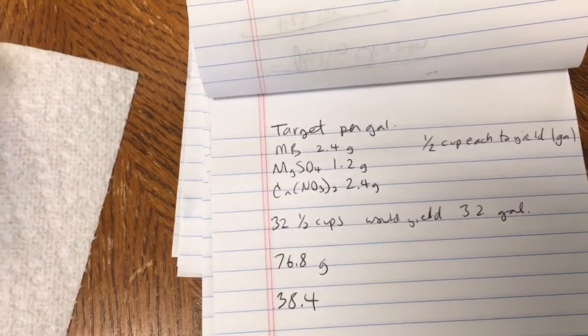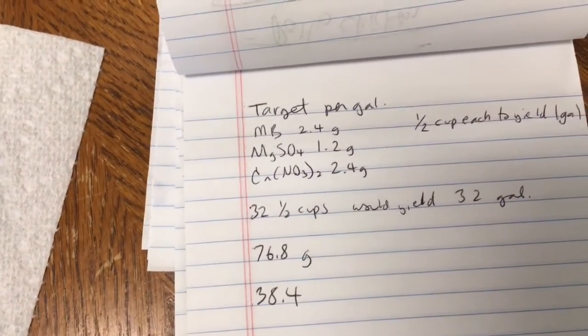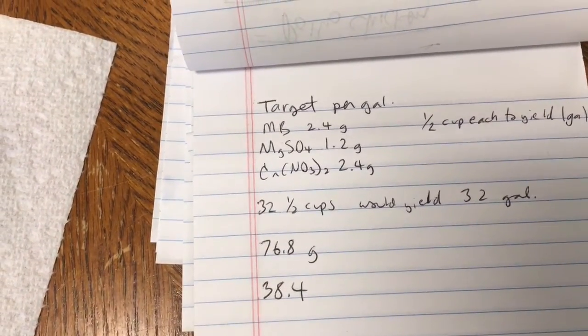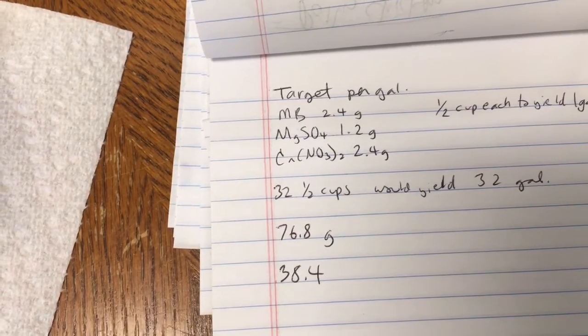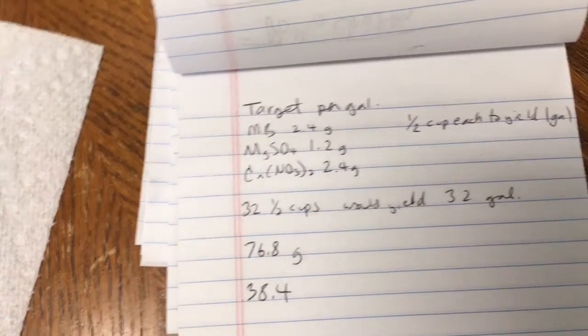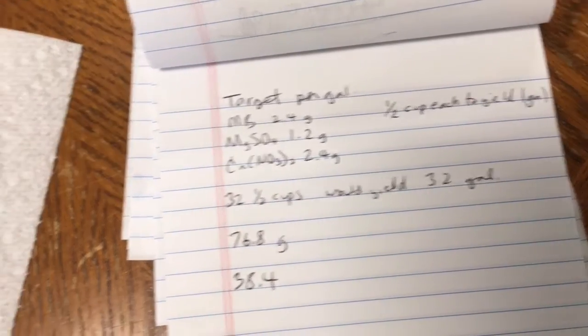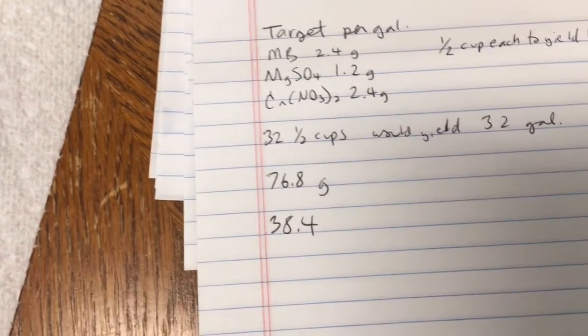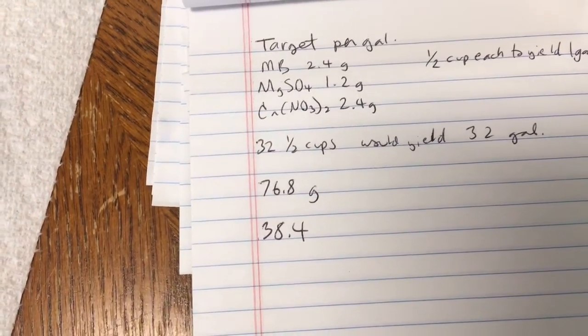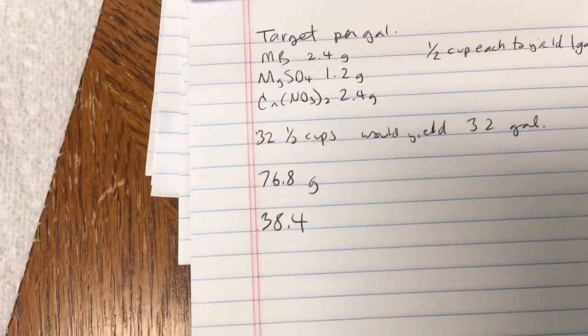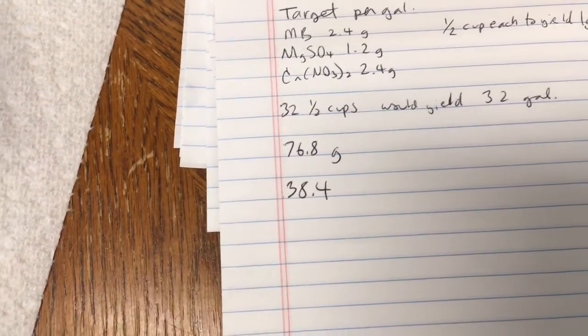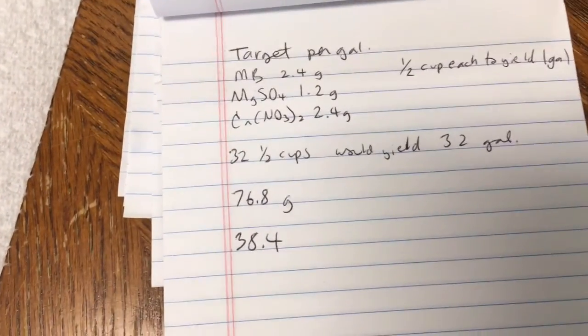I calculated the number of cups in a gallon, which is about 16, so that's 32 half cups. So I should yield 32 gallons. To get that for the 2.4 gram measurements, I'll need 76.8 grams, and for the 1.2 gram measurement, I'll need 38.4.